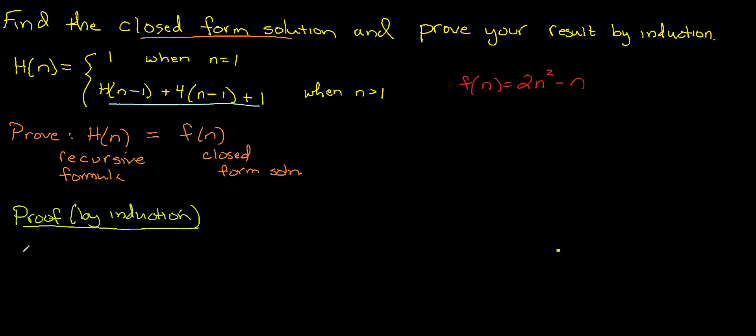Proof by induction has really three steps. The first step is going to be the basis step. I want to show that these two formulas work for the smallest value of n. So for n equals 1, H(1) equals 1. That's given to us in the formula. And F(n), if I crank through the formula, when n equals 1, I have 2 times 1 squared minus 1 equals 1. And so therefore, H(1) equals F(1). Basis step is done. Mission accomplished.